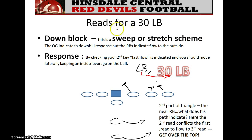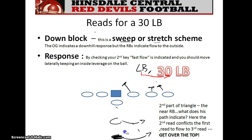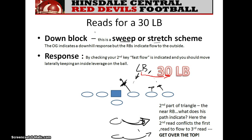Let's look at another read for the 30 linebacker — looking at two reads, not just the first. This is a sweep or stretch scheme. On a sweep, the quarterback pitches the ball to the tailback. On a stretch scheme, the ball goes hard to the edge — like you see Peyton Manning doing, handing to the running back who's working towards the sideline. If you look at the number one key, it's a down block by the guard, which indicates you may come downhill. But then your second read — the near back going away — conflicts with that. Down block says come downhill; second read says get outside. These reads conflict, so you must go to your third read.